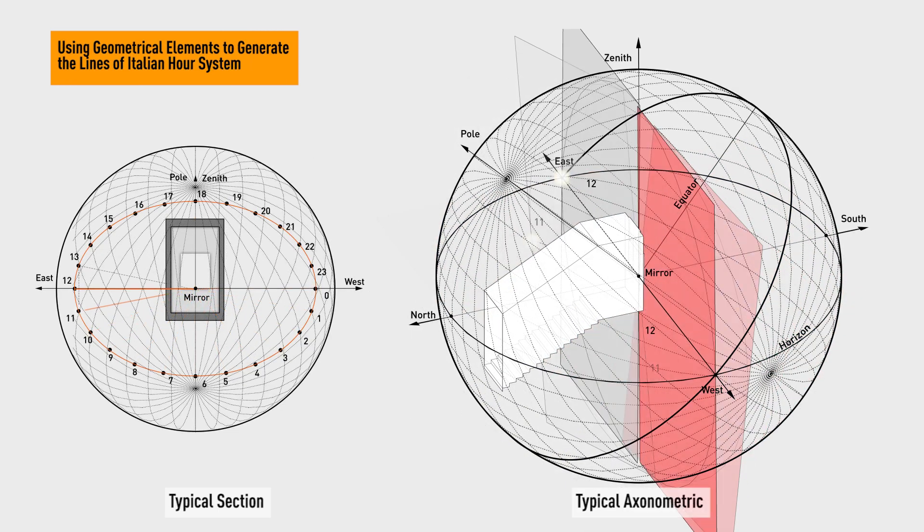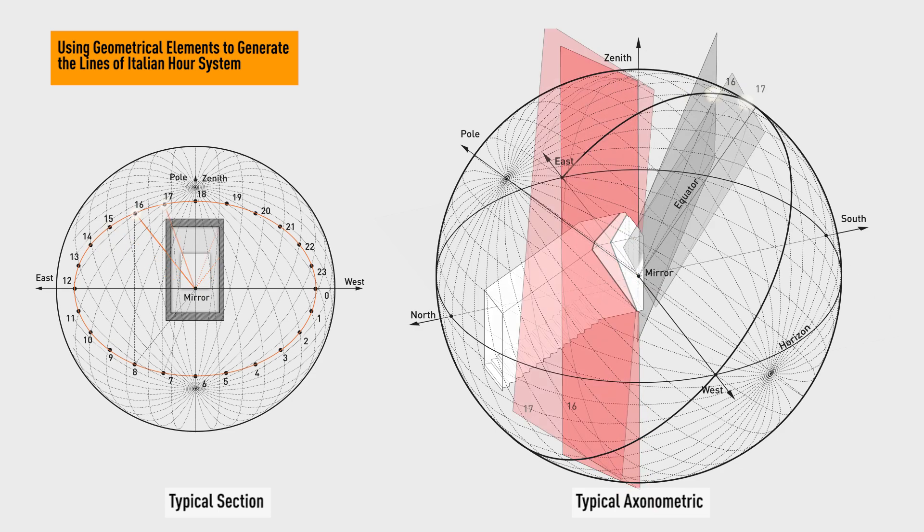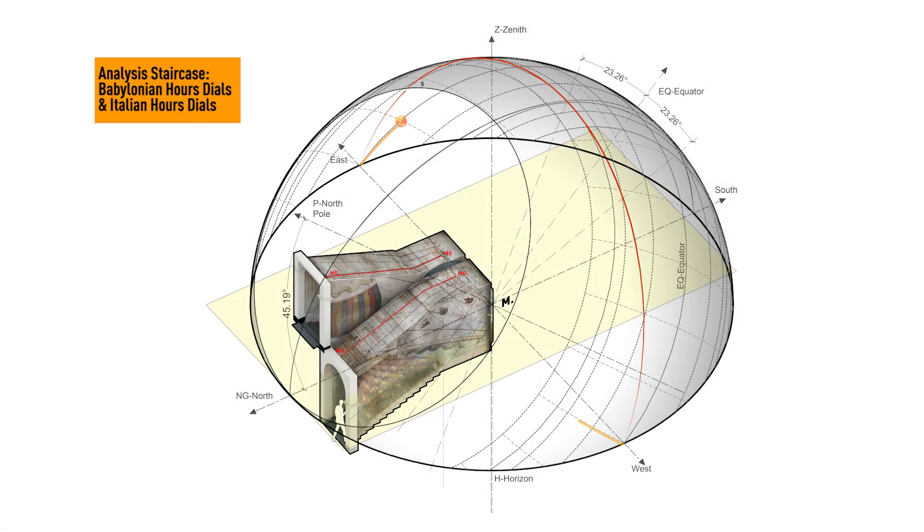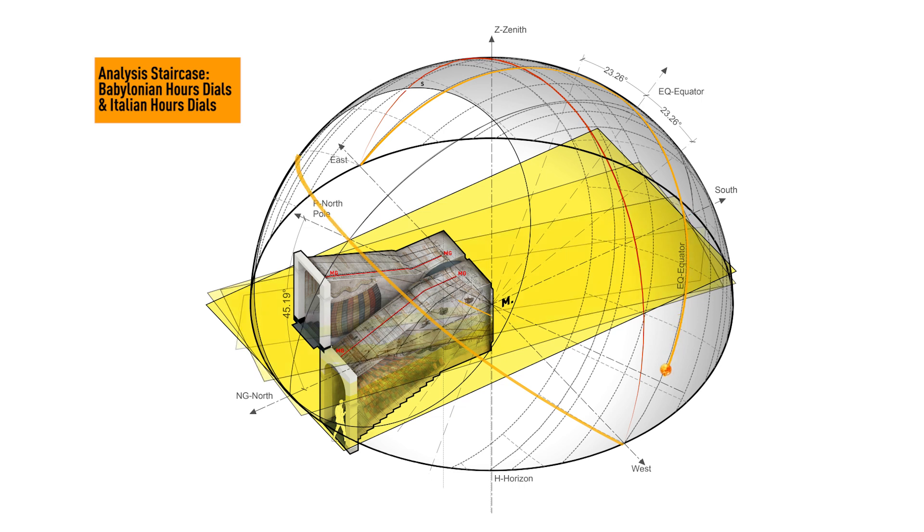Babylonian and Italian hour lines inside the sundial in Grenoble are established through the intersection between the interior surfaces and the rotating plane surface.